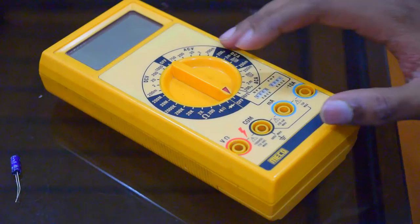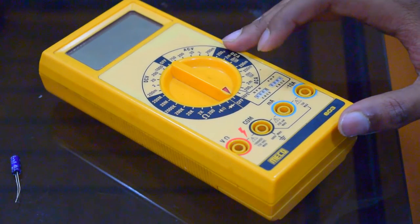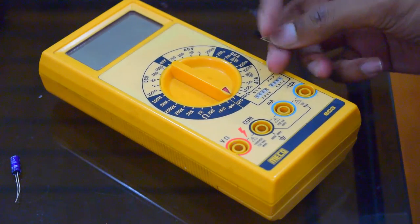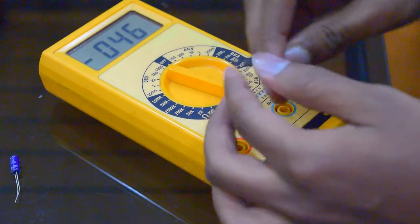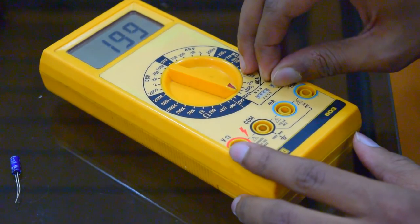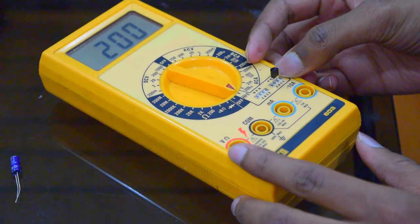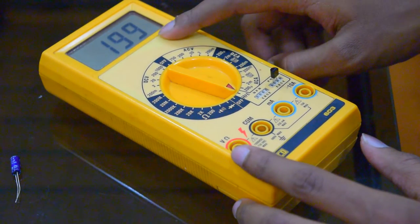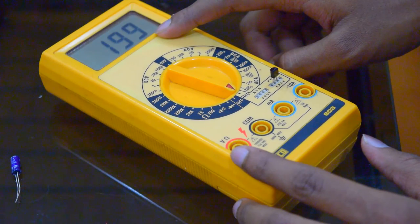You can even measure the HFE of a transistor. I'll show you how to measure the HFE of this transistor. Place the transistor in this slot. This is a PNP transistor so I'm placing it in the PNP slot. The HFE is around 199.